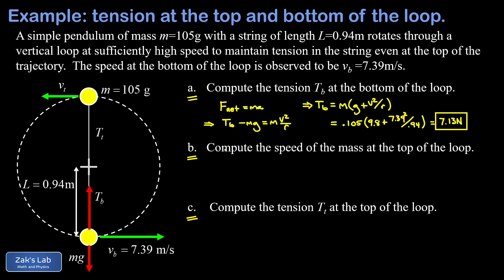In part B we want to find the speed of the pendulum bob at the top of the trajectory. The key concept is energy conservation as the bob goes from the bottom, where it has its highest speed, up to the top, where it has the greatest gravitational potential energy and lowest speed. We set the origin for the y-coordinate at the lowest point, so gravitational potential energy is zero at the bottom.